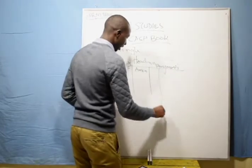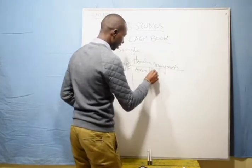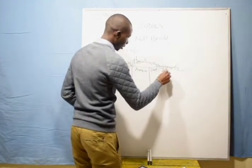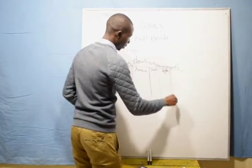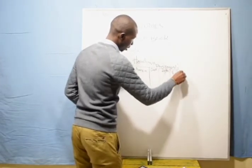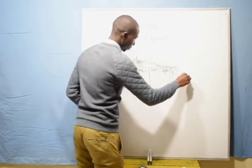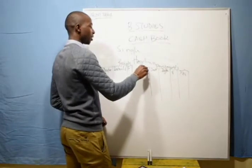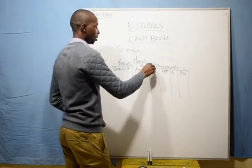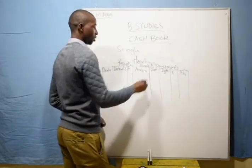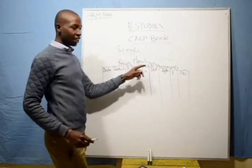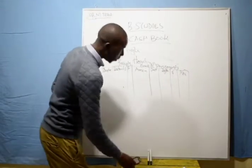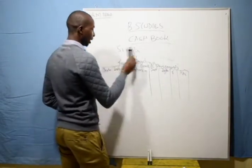On the other side — the payments side — you similarly have: Date, Details, Folio, Amount. The account can be a Bank Account or a Cash Account. That is all about the single column cash book.